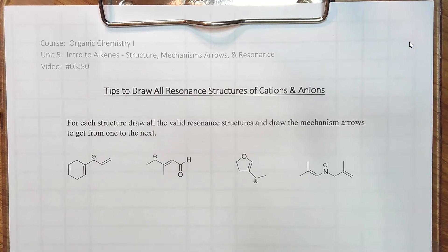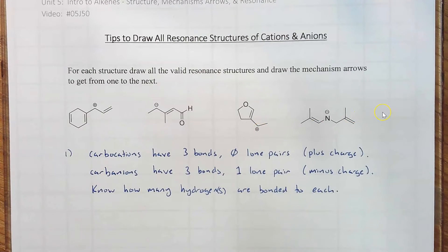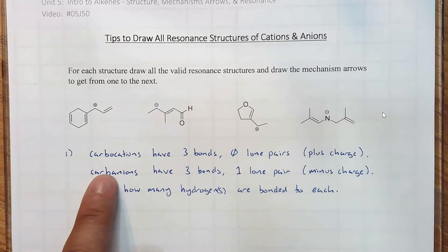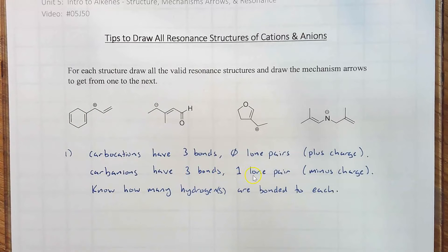First I want to say that this video is far enough in the semester that students should be very comfortable drawing line structures and remembering these things. Carbocations have three bonds and no lone pairs, which is a plus charge. Carbanions have three bonds and one lone pair, which is a minus charge.